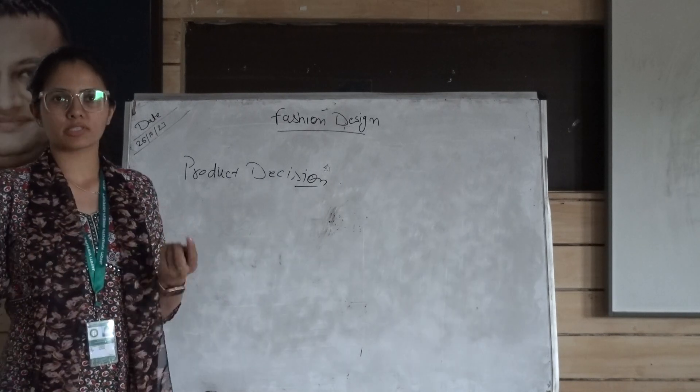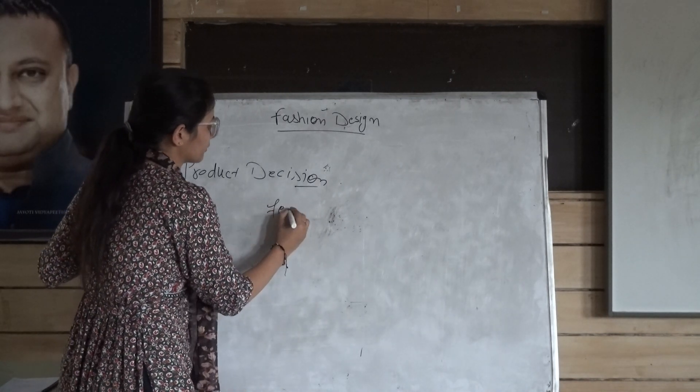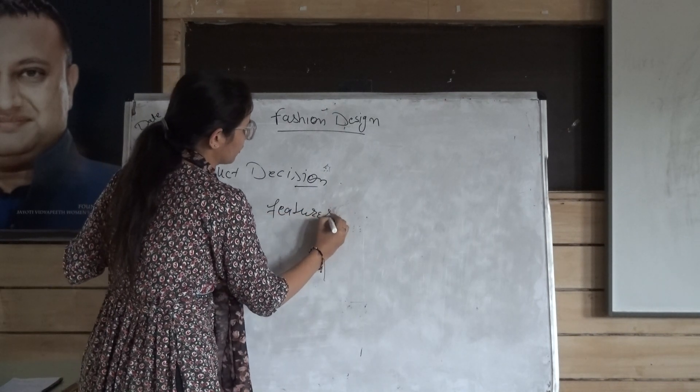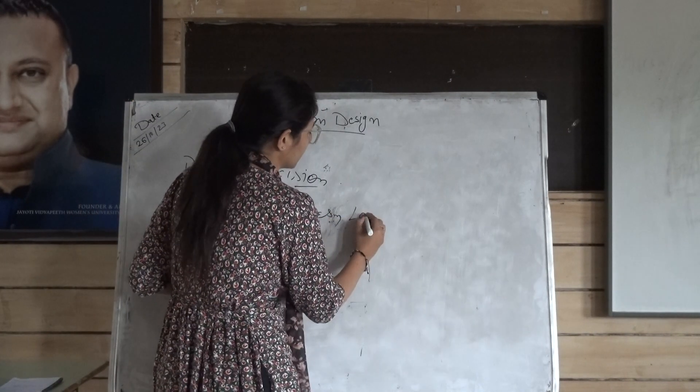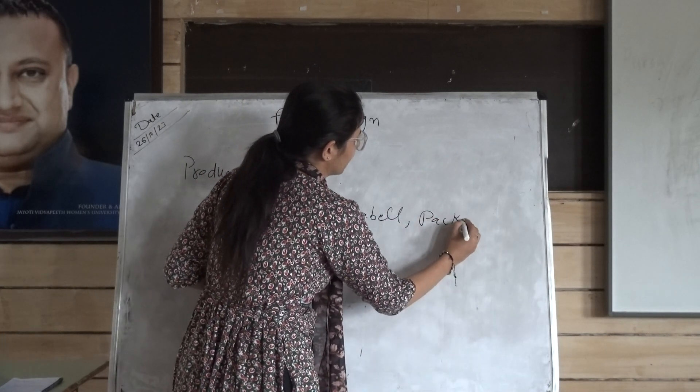It can range from minor to major product. The Product Decision can be related to the features of the product, it can be related to labeling, or it can be related to packaging.